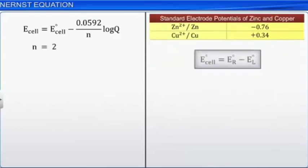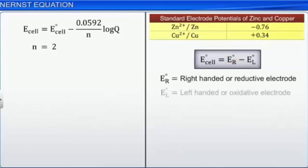Now, we need to find E cell by using the equation shown here. E0R is the electrode standard potential of a right-handed or reductive electrode and E0L is the left-handed or oxidative electrode.